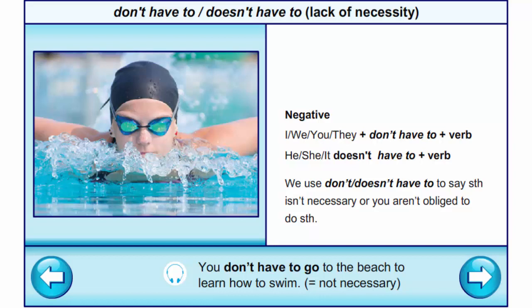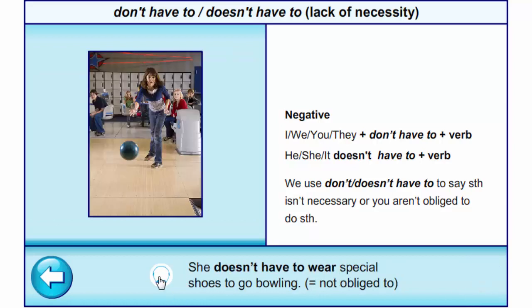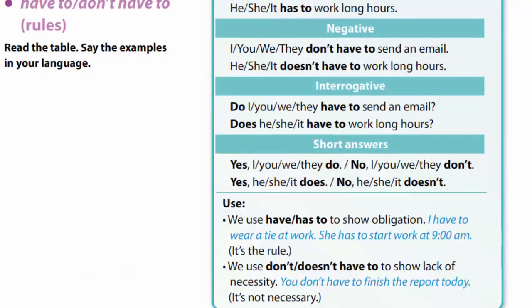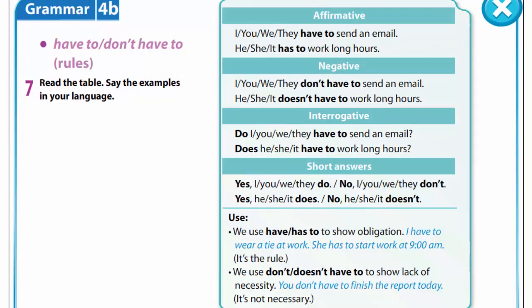We use them to say something isn't necessary or you aren't obliged to do something. You don't have to go to the beach to learn how to swim. She doesn't have to wear special shoes to go bowling. Look at the table in exercise 7 — you see affirmative, negative and interrogative sentences with the usage of do or does, and short answers such as: yes, I do; no, I don't; yes, he does; no, she doesn't.